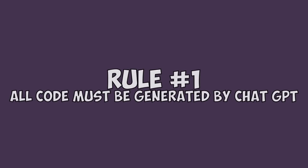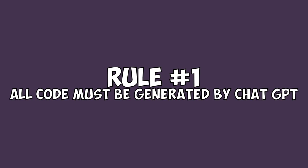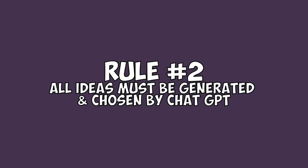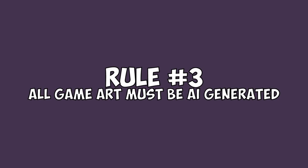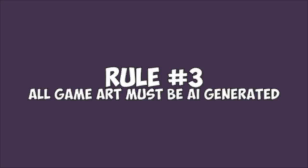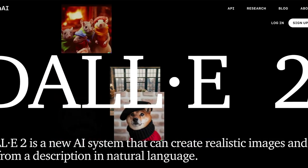To start, we need to set some rules. I want this entire video game to be the product of AI, so all code has to be generated by ChatGPT — none by me. But I do want a game at the end, so if I have to step in, I will allow that. All game ideas have to be generated and chosen by ChatGPT — all game loops, all mechanics, even what the game should look like. All art will also be generated by AI, and I'll be using DALL-E because that's the one I'm most familiar with. Finally, I'm setting a three-hour time limit, just to keep the project scoped small enough to fit into a YouTube video.